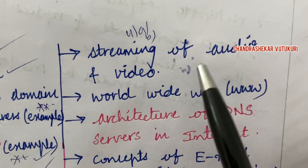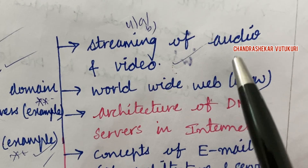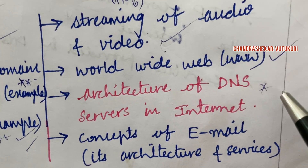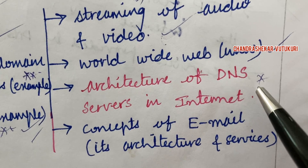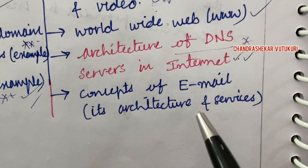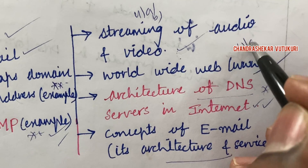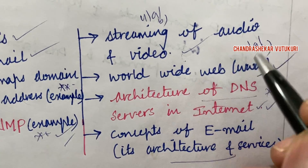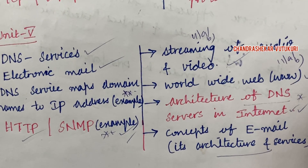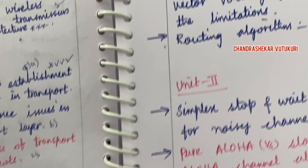From this part we can expect any 10B question. After Unit 4, please work out Unit 5. The fifth unit covers: streaming of audio and video and WWW — this may be a short question. The architecture of a DNS server on the internet is a long question for sure this time. The concept of email, its architecture, and services may be 11A and 11B along with short questions. Please concentrate — you can also write these in your own terms.